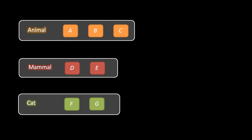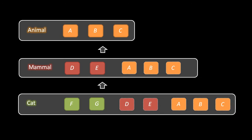If we link these classes together by inheritance — such that Cat inherits from Mammal, and Mammal inherits from Animal — the Mammal class will automatically inherit all of the members of the Animal class, and in turn the Cat class will inherit all of the members of the Mammal class, including those Mammal itself inherited from Animal. So even though when we wrote the Cat class we only specified members F and G, because Cat inherits from Mammal and Mammal from Animal, Cat also has the members A, B, C, and D. This is automatic inheritance.